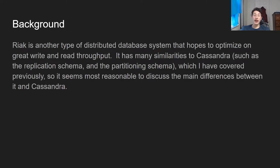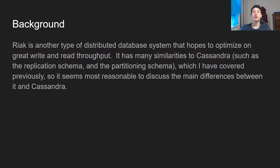Riak is yet another distributed database system that tries to achieve really high read and write throughput. It has a ton of similarities to Cassandra, which I've covered in the past, in terms of both the replication, the partitioning, and the actual write engine. So if you haven't watched that video, I'd recommend watching the Cassandra video first. But it mainly seems most reasonable to discuss the differences between Riak and Cassandra, and there are really only two main ones.